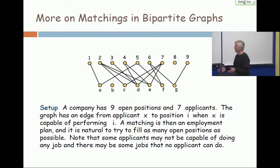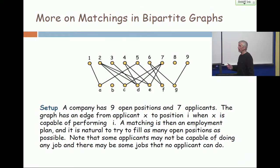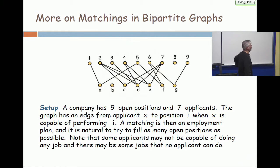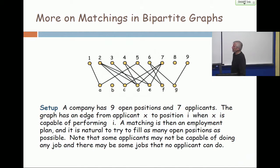Either I give the applicants some tests, or I look at their resumes, or some other method, and I make a judgment about whether a candidate is able to carry out the responsibilities of a certain job — and they're different jobs. One might be brain surgeon, one might be truck driver. So you get a bipartite graph like this, in which you have an edge between a candidate and a job when that applicant is capable of doing that job.